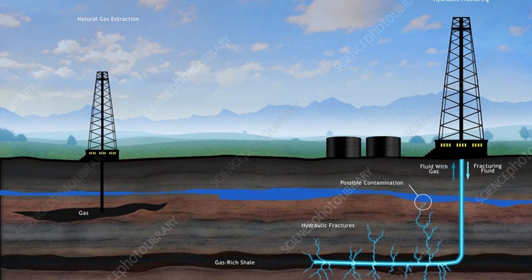In the United States and in a few other countries, natural gas is produced from shale and other types of sedimentary rock formations by forcing water, chemicals, and sand down a well under high pressure. This process, called hydraulic fracturing or fracking, and sometimes referred to as unconventional production, breaks up the formation, releases the natural gas from the rock, and allows the natural gas to flow to and up wells to the surface.